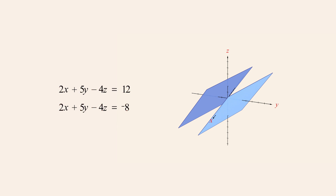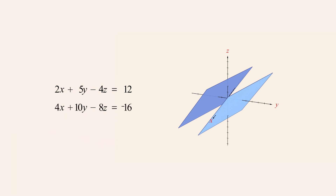Now let's change the second equation by multiplying it by two. Since multiplying both sides of an equation by a non-zero constant doesn't change its solutions, the two equations still describe the same planes. This might make the situation a little less obvious. However, if we notice that the coefficients in the second equation are all twice the value of the coefficients in the first equation but the constants are not, we could still recognize that the equations describe parallel planes. So when the coefficients of two equations are the same multiple of each other but the constants are not, this tells us the system is inconsistent.